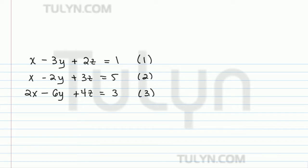Given a linear system of three equations and three variables such as this one: x minus 3y plus 2z equals 1, x minus 2y plus 3z equals 5, and 2x minus 6y plus 4z equals 3. First thing we should do is label our equations. We're going to call them 1, 2, and 3.